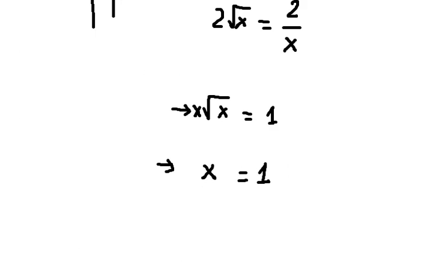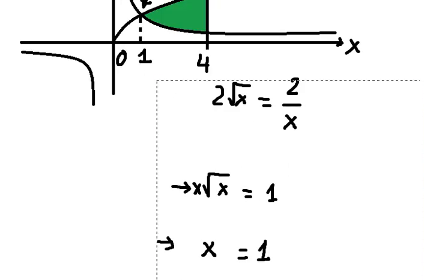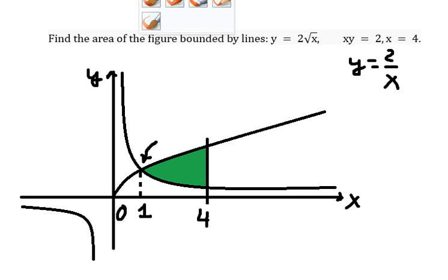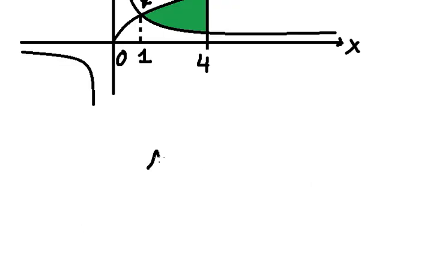So in this case, we have A, that is the integration from 1 to 4. So we have the upper function minus the lower function.